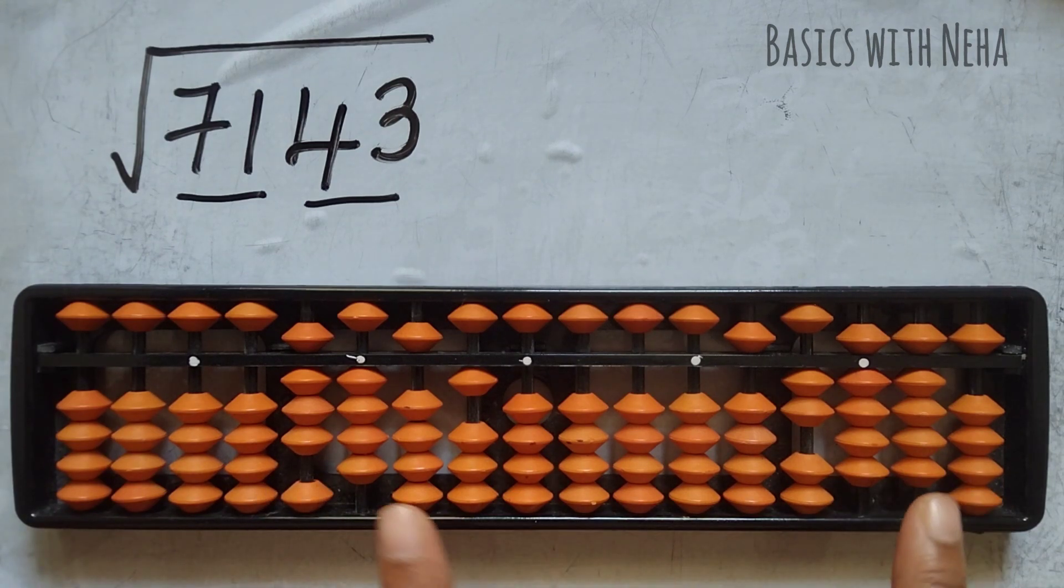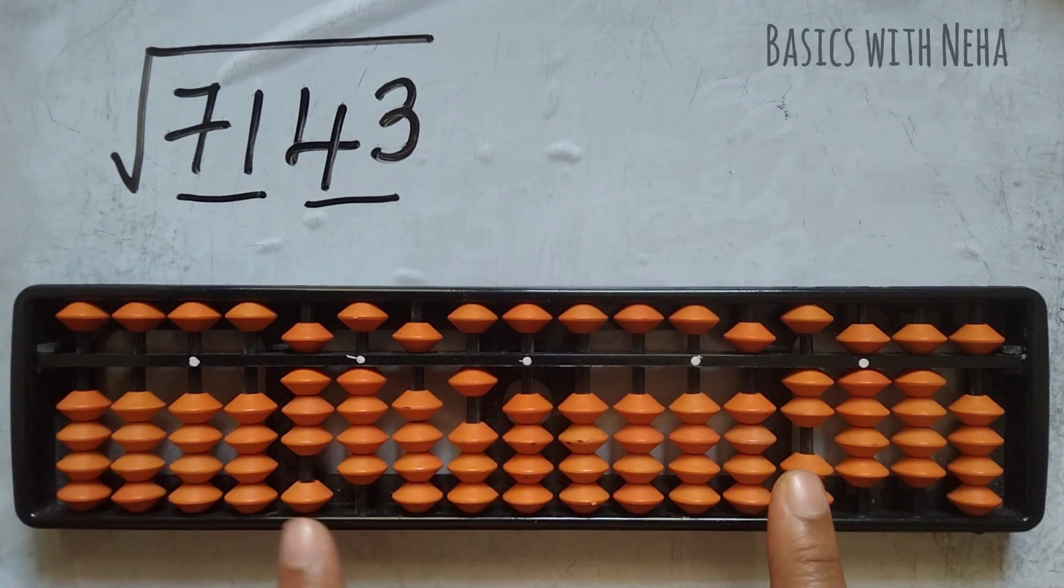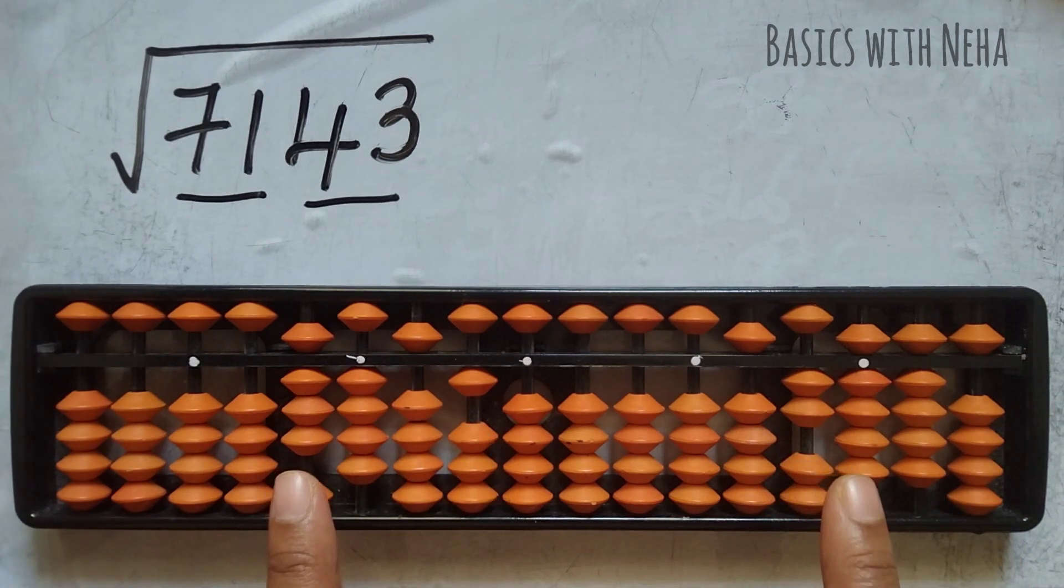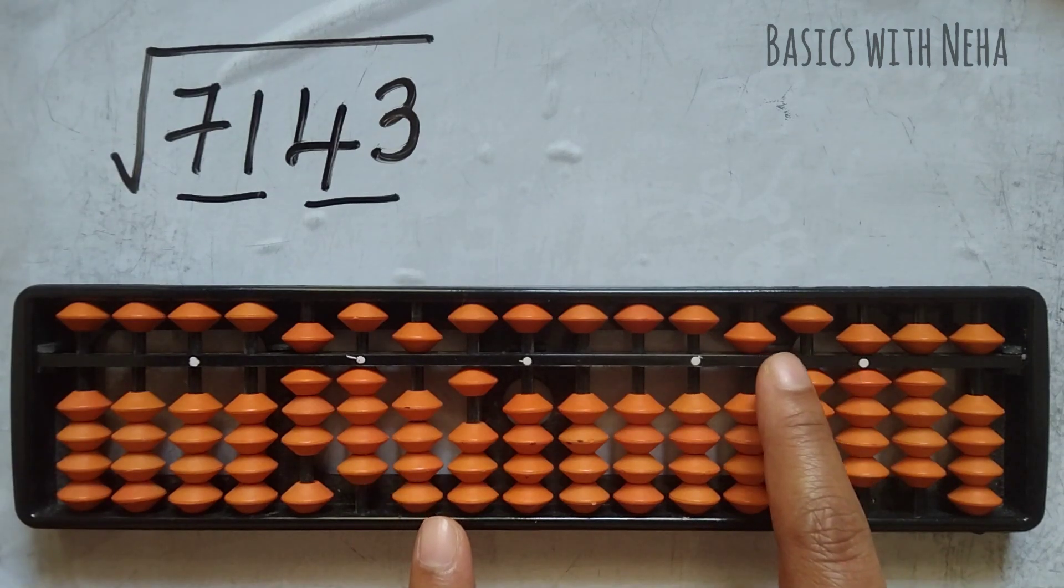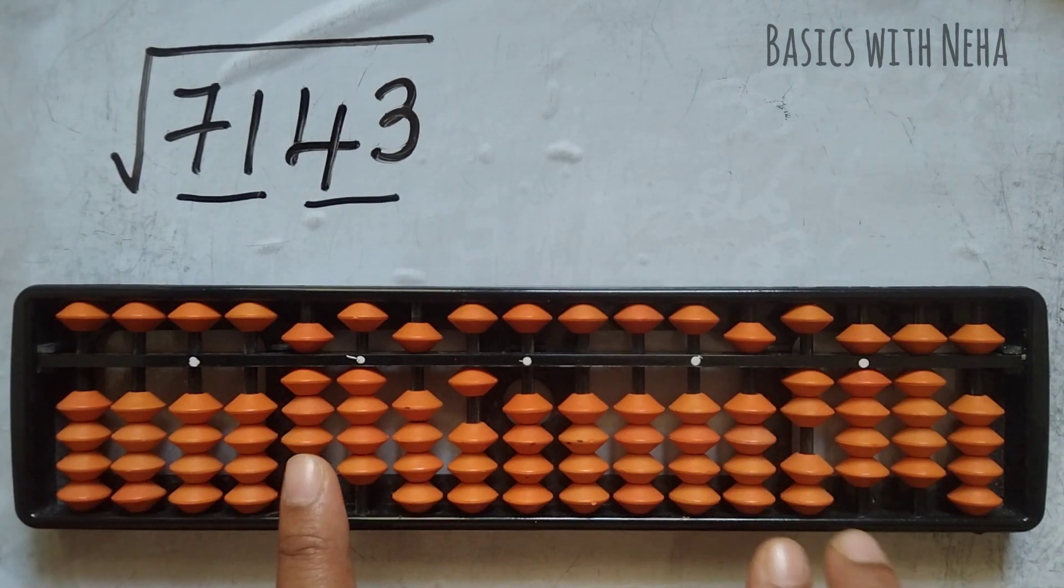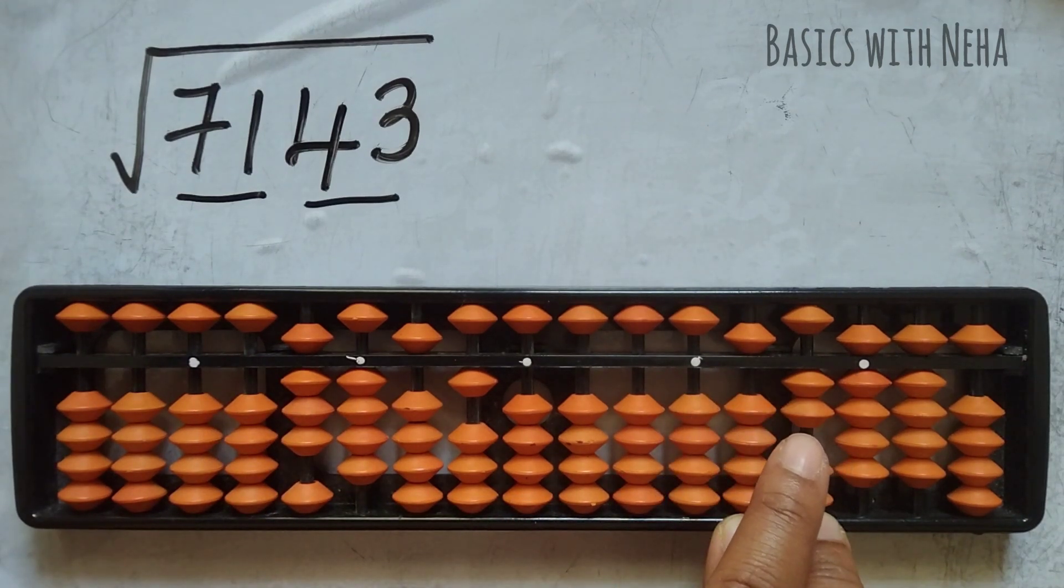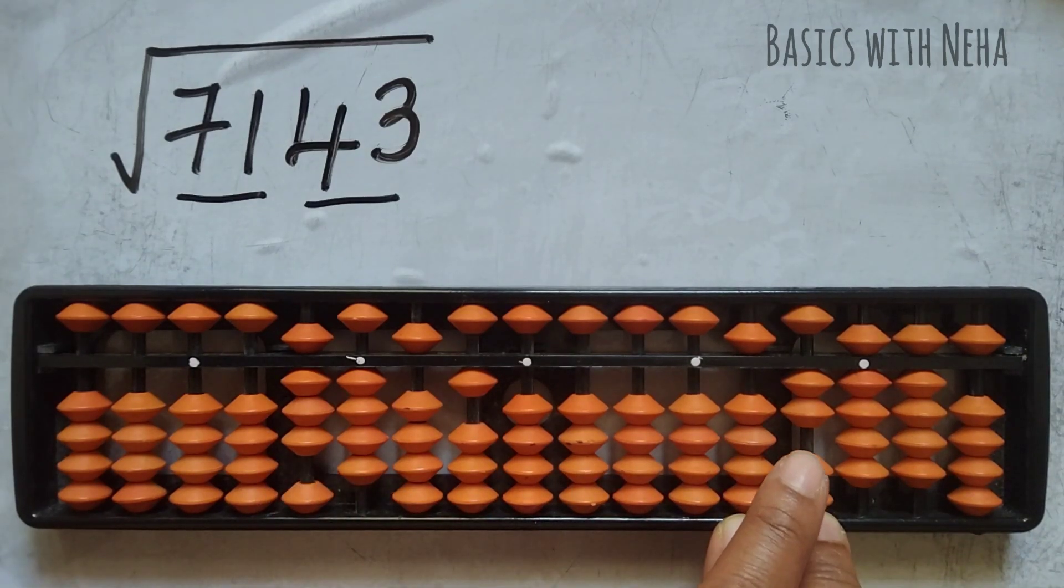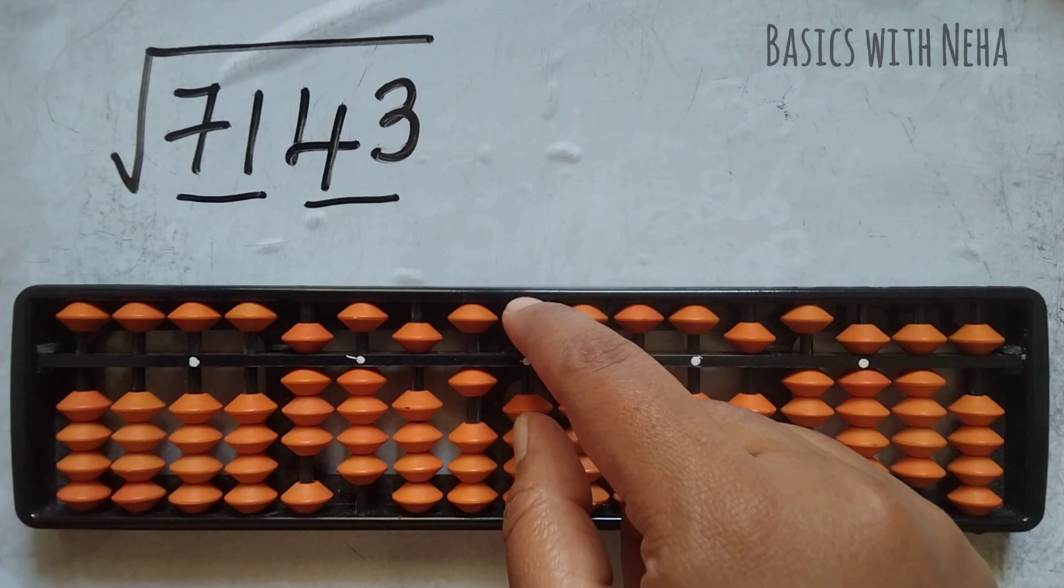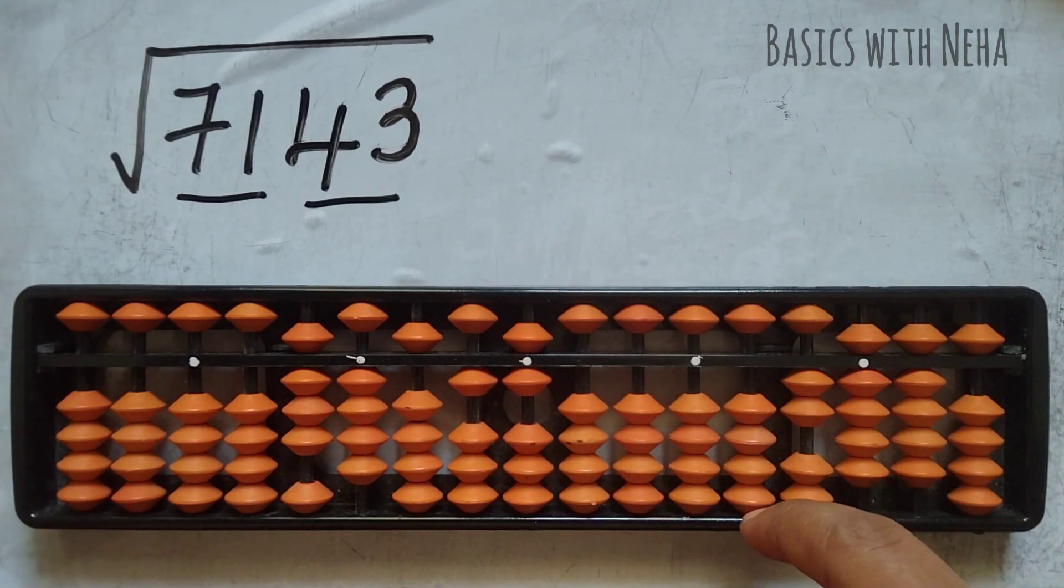Now if I go further, if I have to go more than two decimal places, then again I will see I have to multiply something with this 8 in order to get 5. But it's not possible. So I'll take these two rods. I'll multiply something with this 8 in order to get 52. So it will be 8 sixes are 48. 8 sevens are 56. I cannot go with 7 ten times. So I'll take 8 sixes are 48. Then I'll continue.